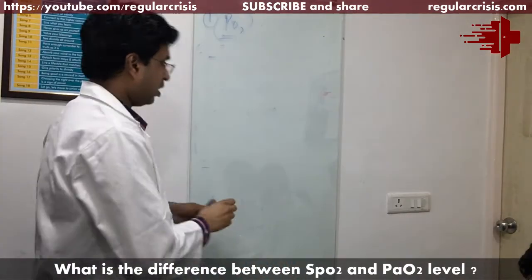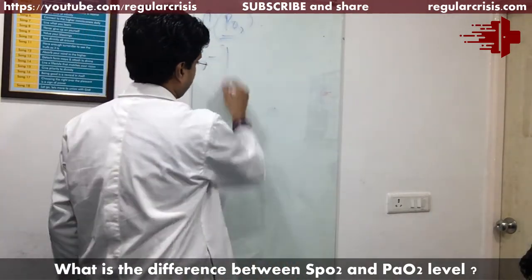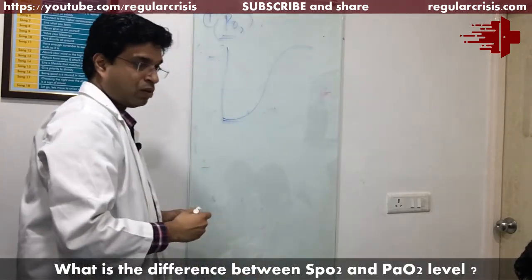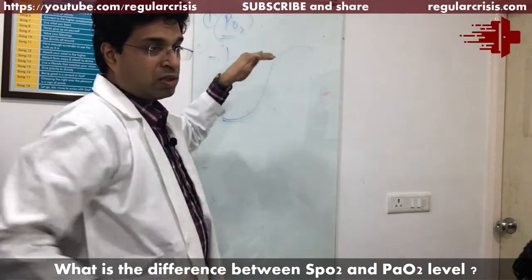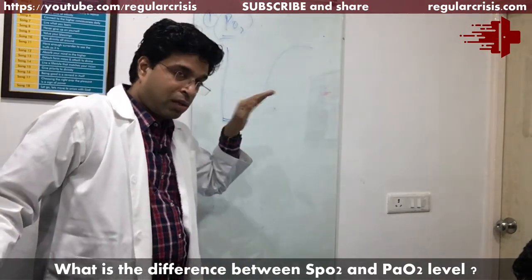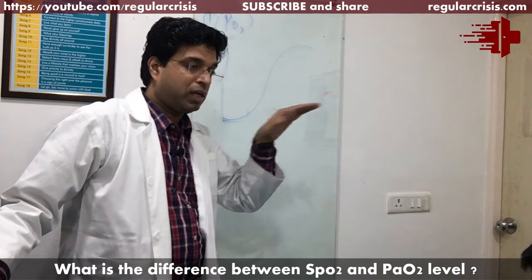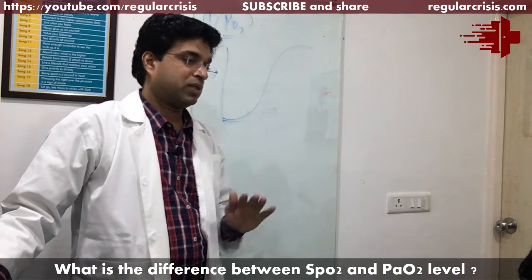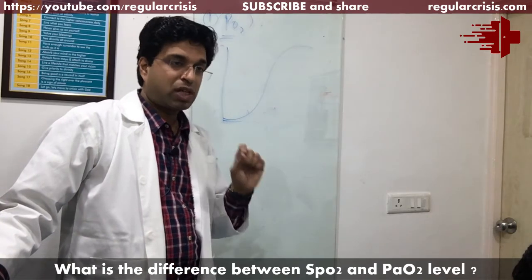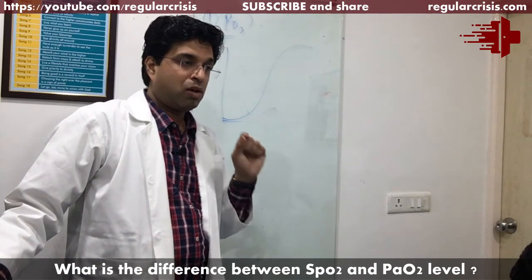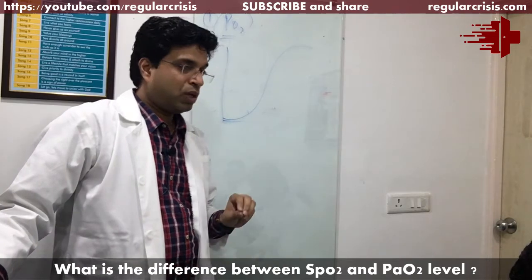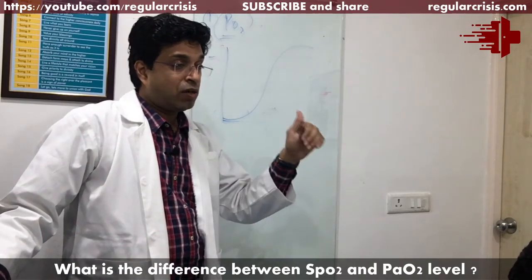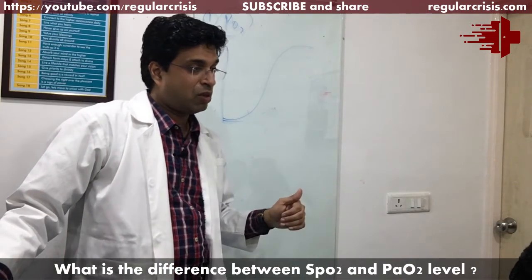The oxygen dissociation curve is shaped like a sigmoid. Until your SpO2 is around 90%, your PO2 in the blood will definitely be above 60. If your saturation on the monitor is above 90%, your PO2 level in the blood will be above 60. But when the SpO2 level falls below 90%, the PO2 level drastically falls in the blood — this is the steep part of the curve.